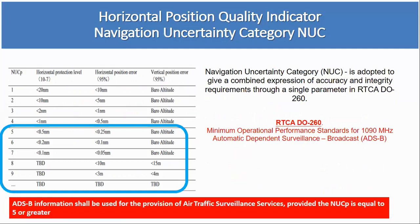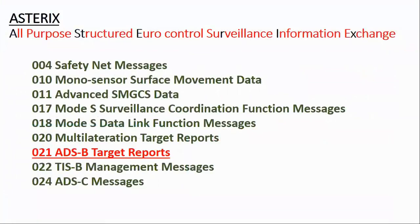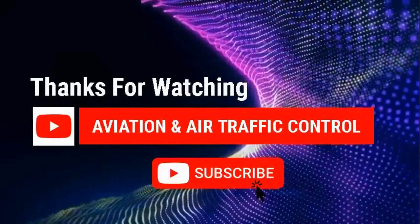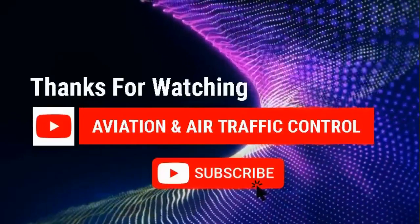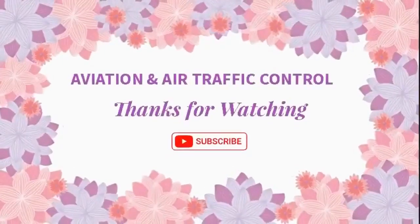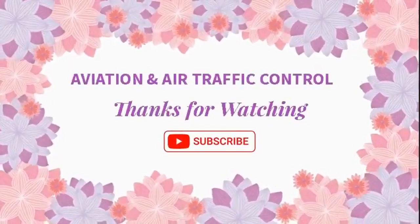As per ICAO, ADS-B information shall be used for the provision of air traffic surveillance services, provided the NUC is equal to 5 or greater. Once received by a ground station or other ADS-B In aircraft, it will determine position and FOM derived from the HPL. The information will be sent to the ATC display system using Asterix-21 format. Asterix is All-Purpose Structured Eurocontrol Surveillance Information Exchange, a standard for the exchange of air traffic services information, developed and maintained by the European ATS organization Eurocontrol.